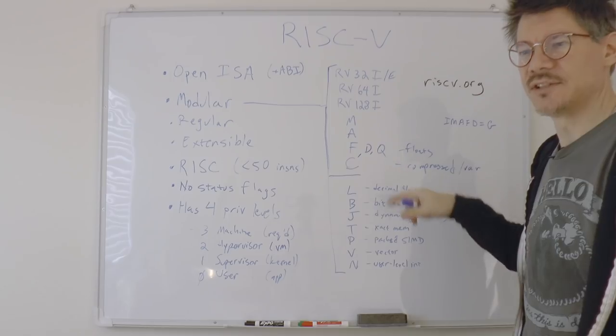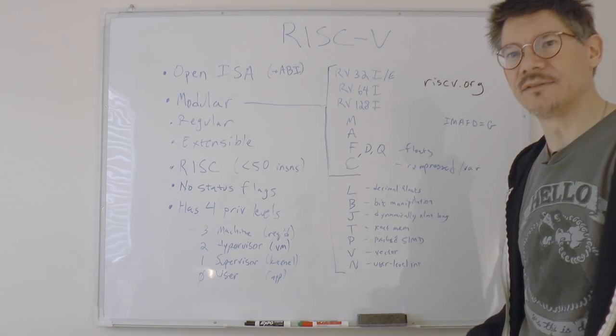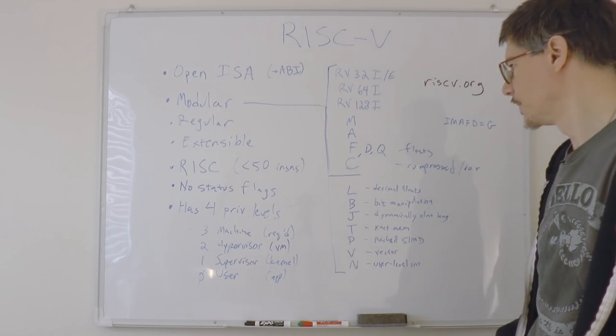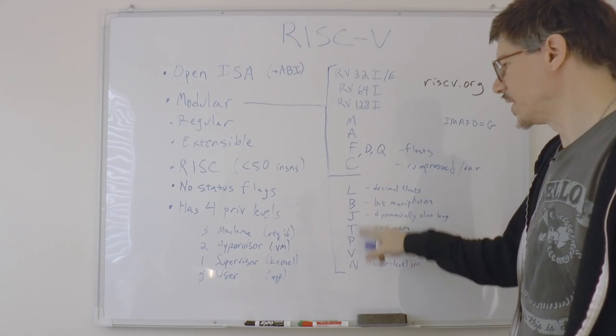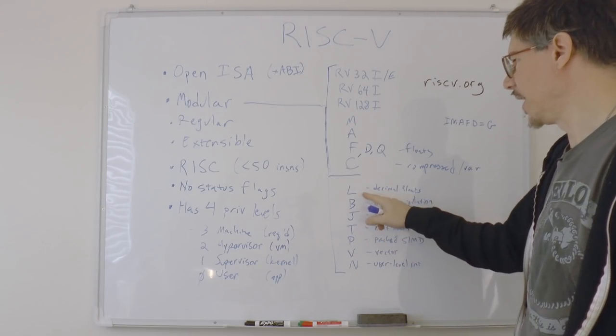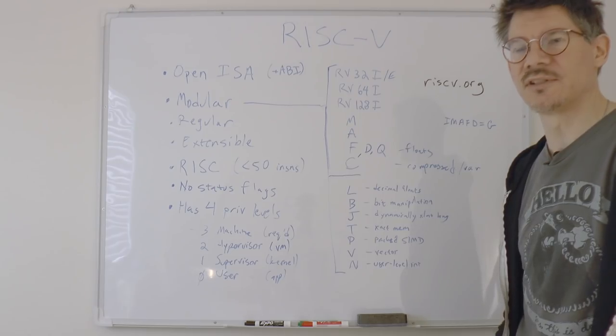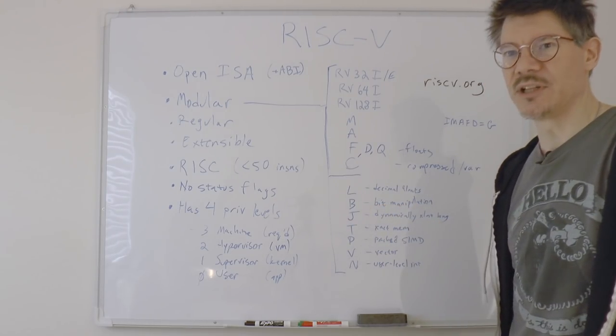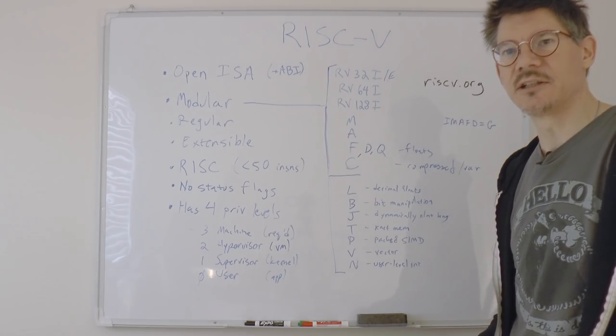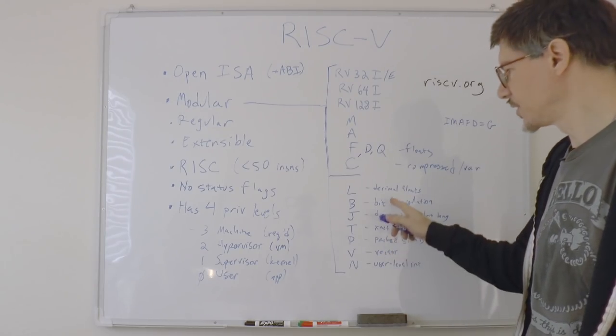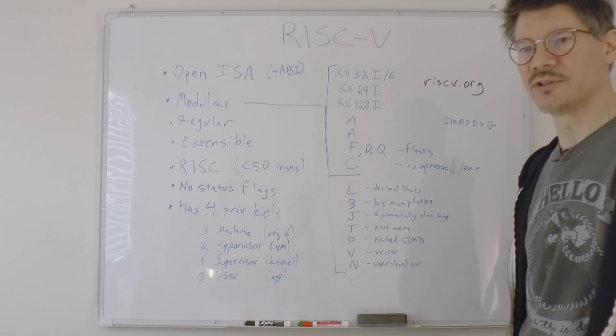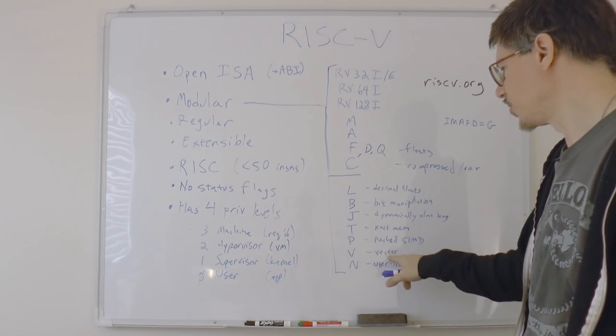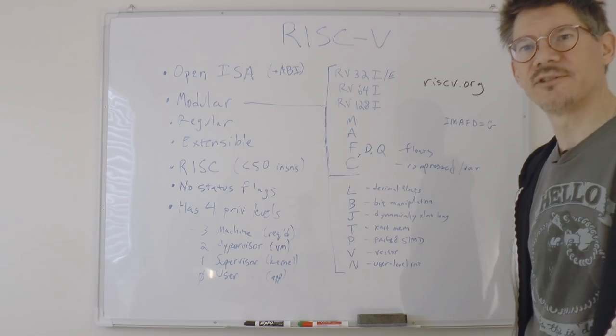All of these extensions have been pretty much finalized and frozen by the foundation, but there are a bunch more extensions in the works. For example, L are for decimal floats, like for example in a calculator. B is for bit manipulation, so things like setting and clearing bits. And then there are other extensions which are mainly placeholders for when they become defined. V is an interesting one, it's for vector instructions.